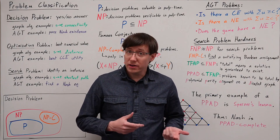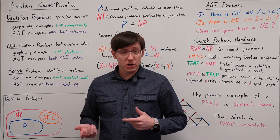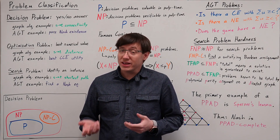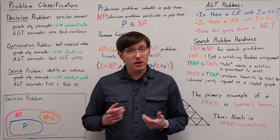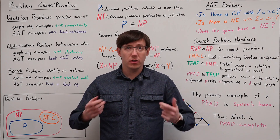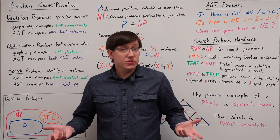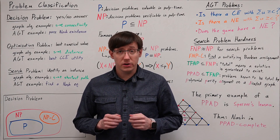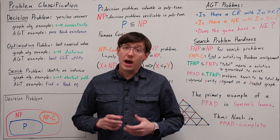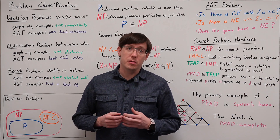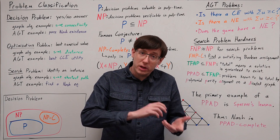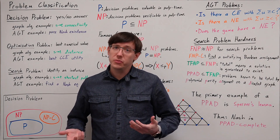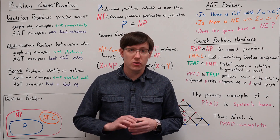Last time we saw that we can use polynomial time reductions to prove that problems are hard, as long as we have at least one starting problem that we know we can't solve efficiently. But since our starting point was just to assume that Nash equilibria are hard to compute, I want to give some better motivation by connecting the Nash equilibrium problem with other well-studied concepts in computational complexity.